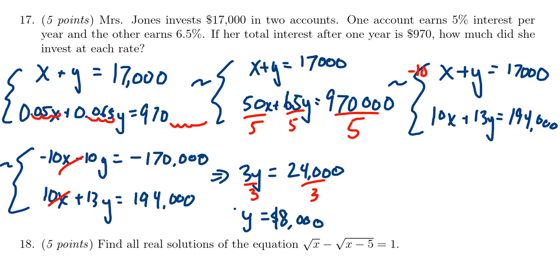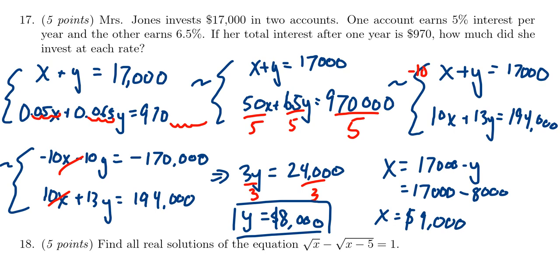That's how much was invested into the second account. How much was invested into the first account? We should just plug in 8,000 into the first equation. That would be the easiest one to solve for X. So X equals 17,000 minus Y, which is 17,000 take away 8,000, and that's going to leave us with X equals $9,000. So $9,000 was invested at a rate of 5% and $8,000 was invested at a rate of 6.5%.